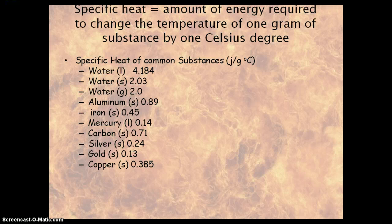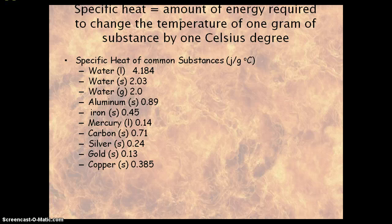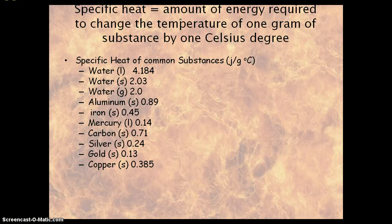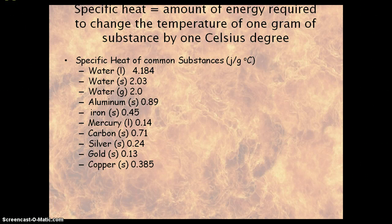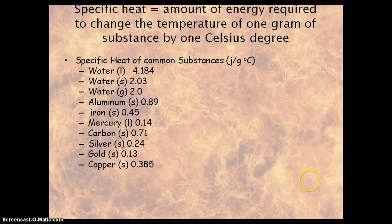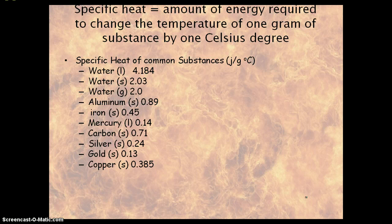Here is C, which is specific heat. Specific heat is the amount of energy required to change the temperature of one gram of a substance by one degree Celsius. You can see it varies for different substances, so it depends on what substance we're dealing with. We'll pull some of these values as we work problems.